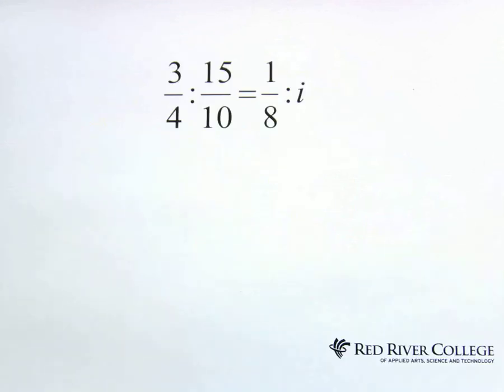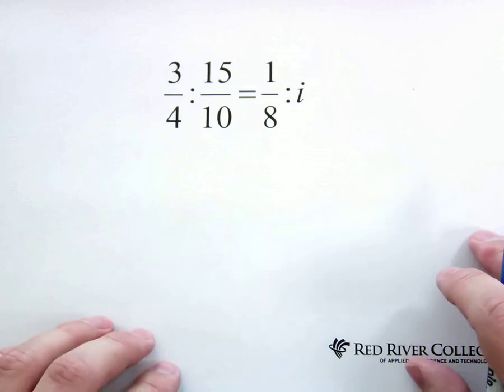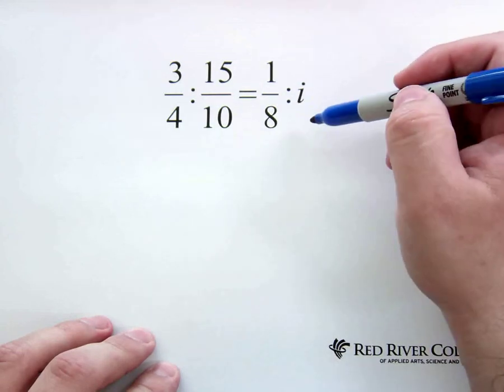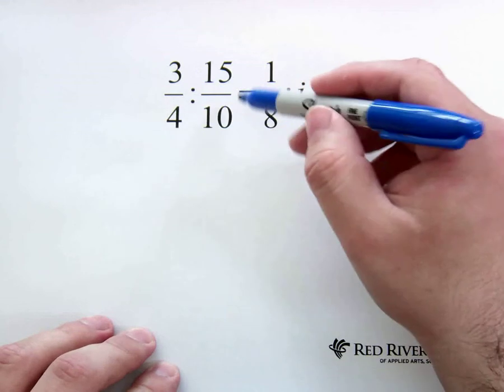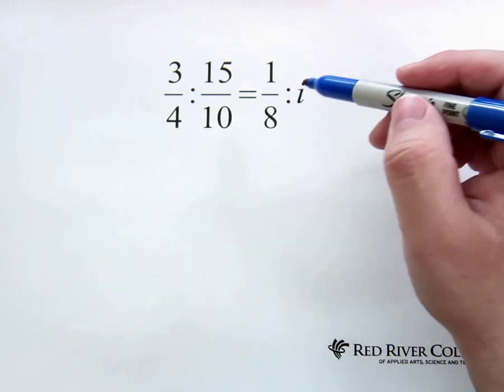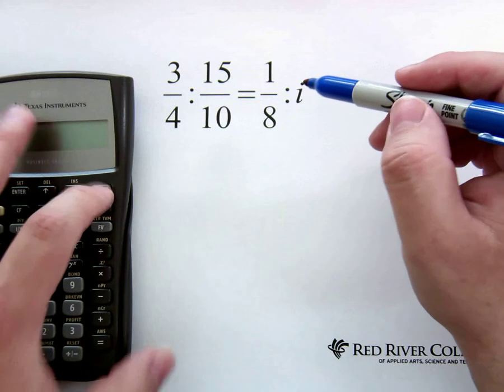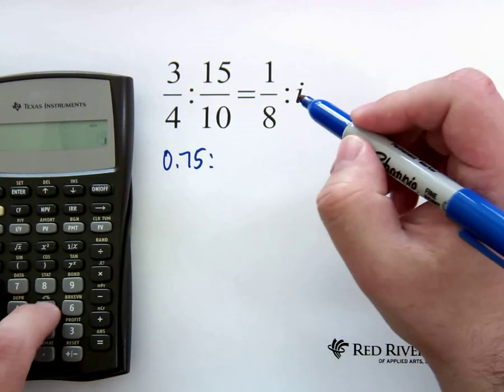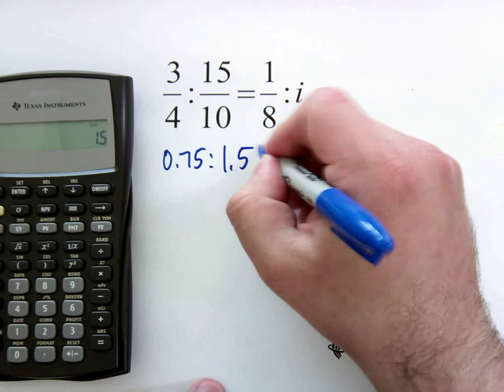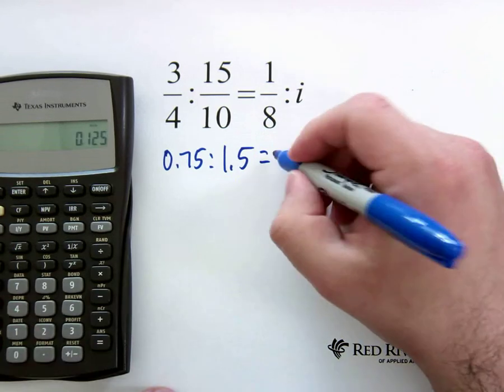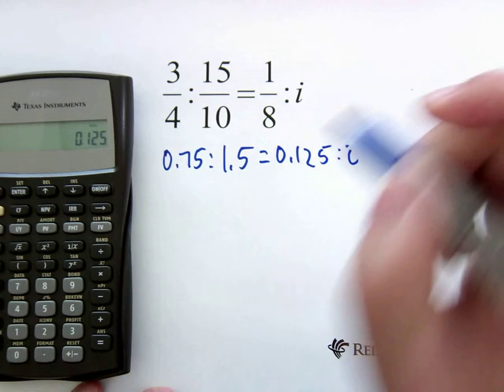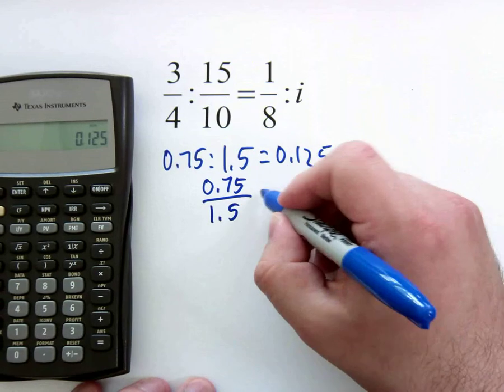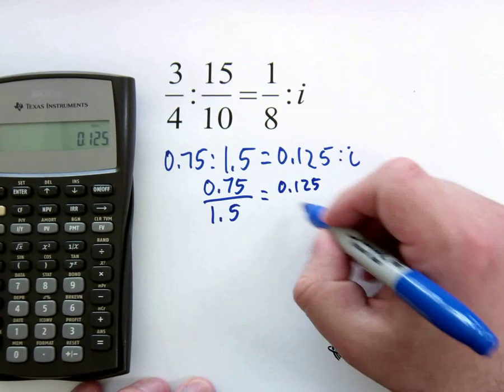Let's try a fraction. So we've got three-quarters to 15 over 10 is equal to 1 over 8 is equal to i. Now these are decimal numbers that we can work with, so we can change these to decimals. So let's just bring in the calculator and go 3 divided by 4. And this is 0.75. And 15 divided by 10, 1.5 is equal to 1 divided by 8, 0.125 to i. So now that we have decimals, let's put them into our fraction form. So 0.75 over 1.5 is equal to 0.125 over i.